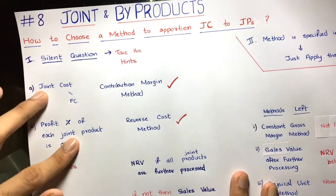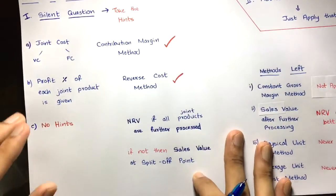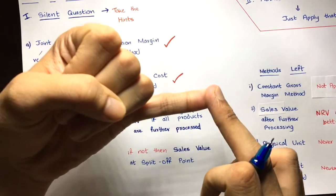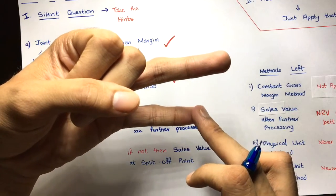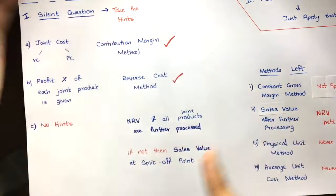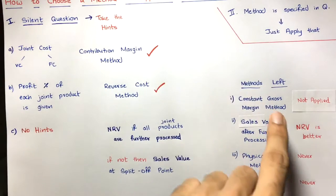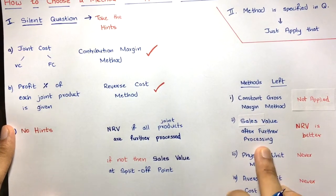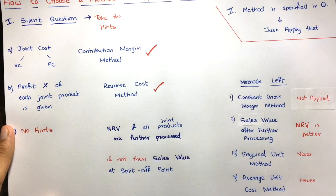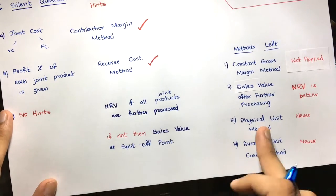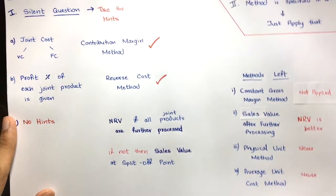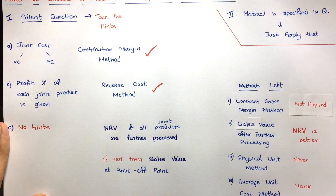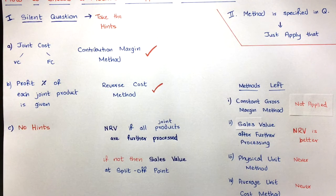To summarize: if hints are available, apply accordingly. If no hints are available, apply NRV if all joint products are further processed; if not all are further processed, apply sales value at split-off point method. Constant gross margin — not applied in silent questions. Sales value after further processing — not applied because NRV is better. Physical unit and average unit cost — never apply on your own. That's it for this video, see you in the next one.